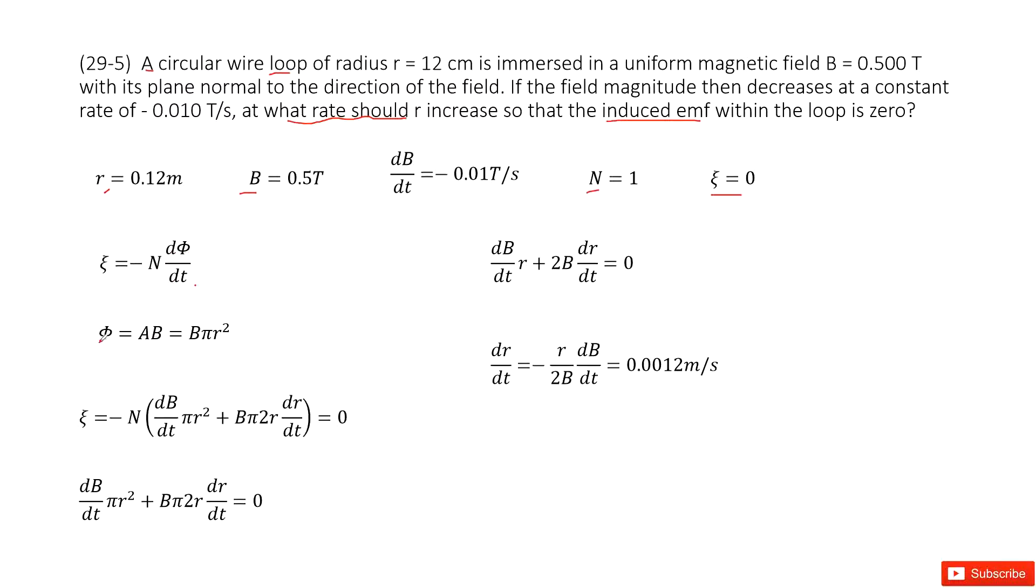As we talk about magnetic flux, it's A times B. So we can see it tells us this plane is normal to the direction of the field, so theta is 90 degrees. So then we can have B times pi r squared.